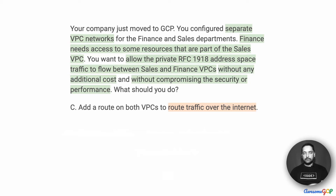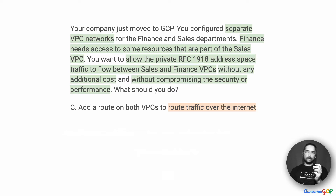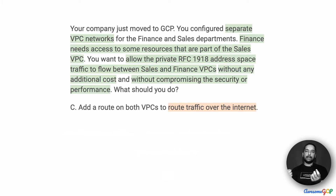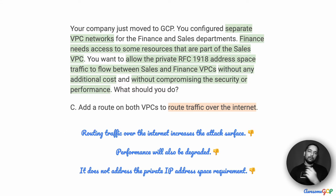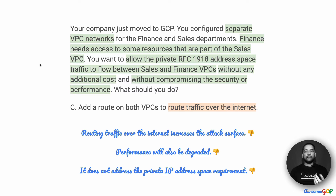Option C suggests that we add a route on both VPCs to route traffic over the internet. In this case, data going from the finance team goes out to the public internet, comes back into Google Cloud, into the Google Cloud network, and then enters the sales network and vice versa. Routing traffic over the internet increases the attack surface, and therefore anything involving such an option is going to compromise the security in some way.